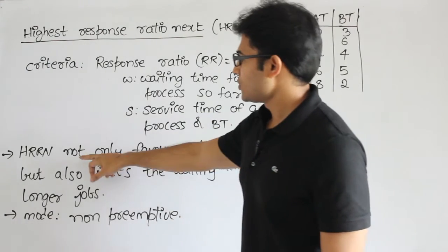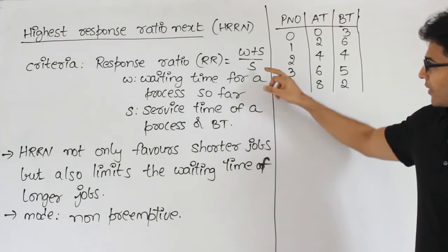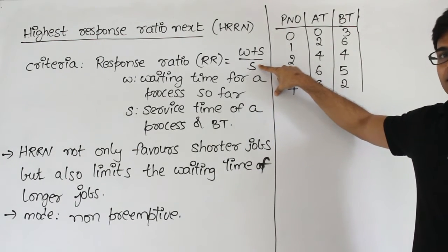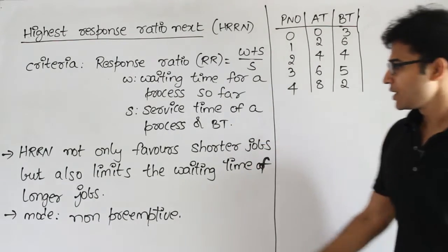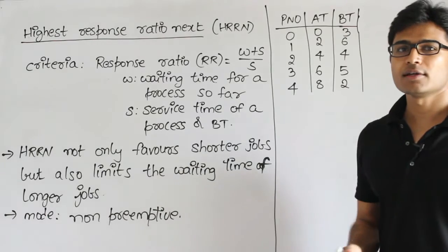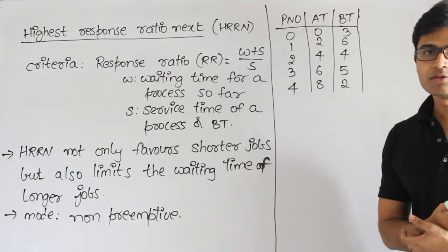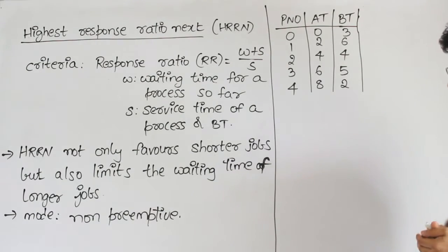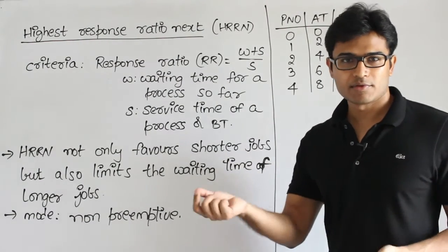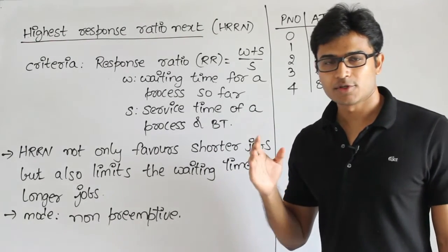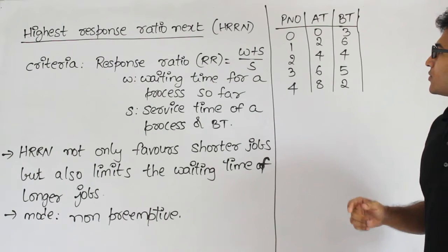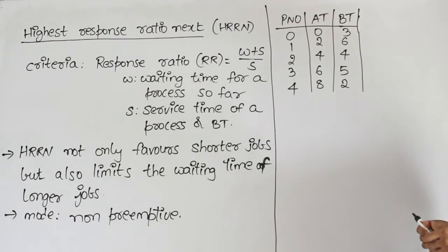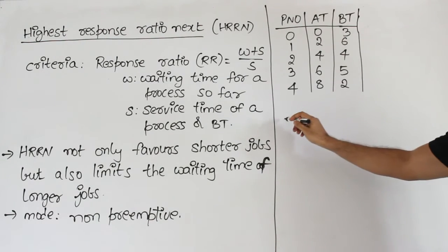HRRN not only favors the shorter job - because the denominator is service time, lesser service time gives a higher factor. But it also limits the waiting time of longer jobs, meaning it will not let a job wait too long just because it has a large burst time. The mode is non-preemptive, meaning once we pick a job we run it to completion.